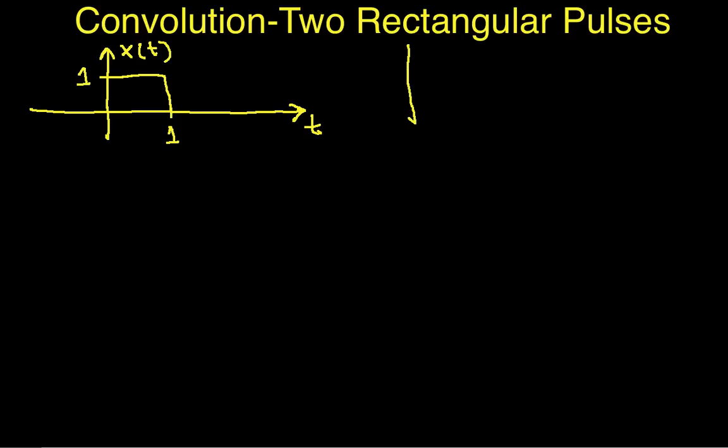And let's come up with a second pulse that we're going to convolve here and we'll call this h of t. Let's make this a long pulse. So it'll go out to 3 and again have an amplitude of 1.